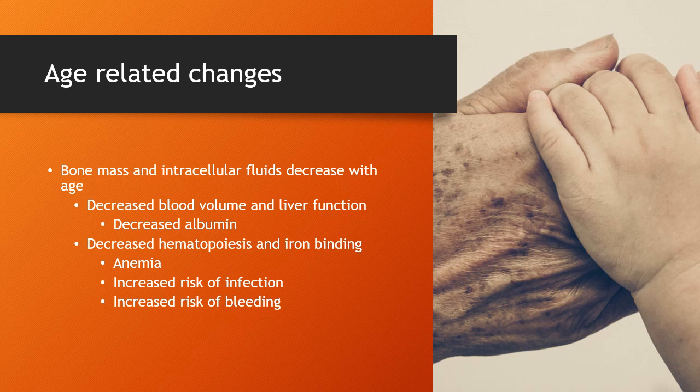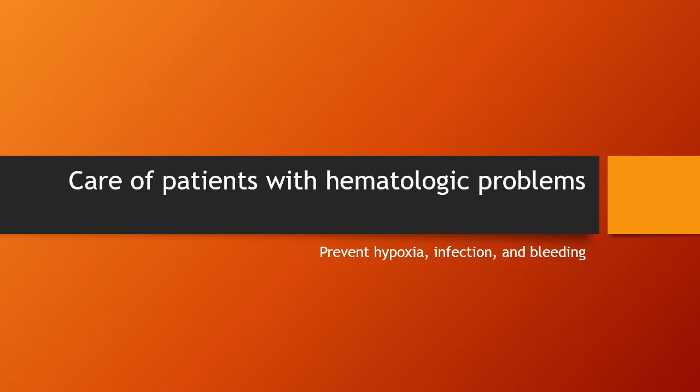Age-related changes related to the hematologic system include a decline in bone mass and intracellular fluids, a decrease in blood volume and liver function — including decreased production of albumin and other plasma proteins — and a decrease in hematopoiesis and iron binding. As we get older we're at higher risk for anemia, infection, and bleeding.